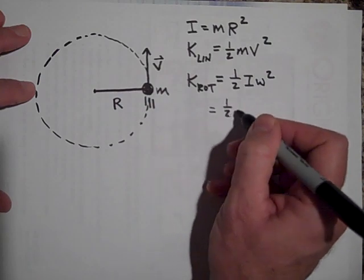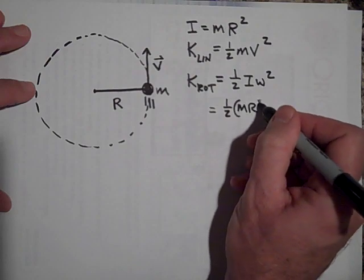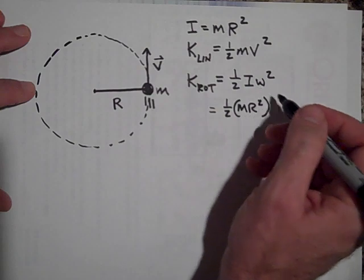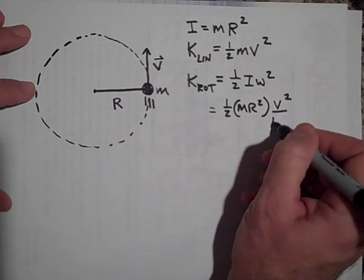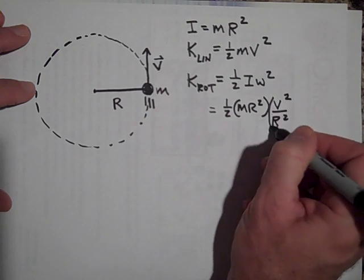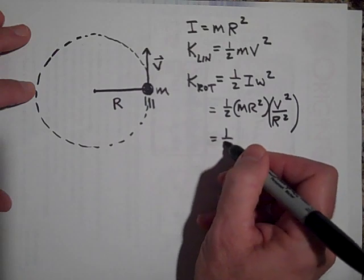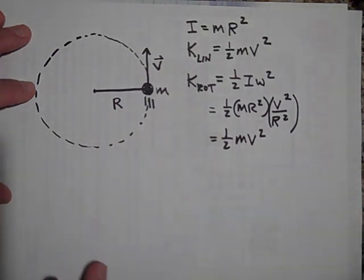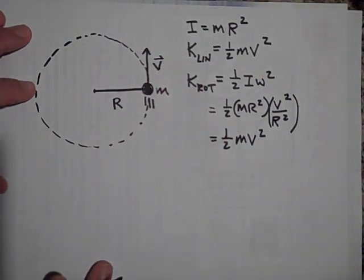This is going to be one half. Now I is mr squared. And omega is v over r. So it'd be v over r squared using the bridge equation. And so the r squares cancel. And look, you just get one half mv squared. That's not a coincidence. That's because you can either count it as rotational or linear.